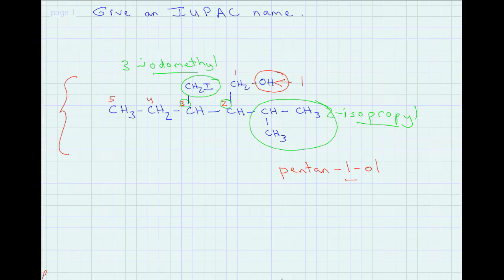Putting it all together, we write: 3-(iodomethyl) in brackets, then 2-isopropyl, followed by the base name pentan-1-ol. So the full name is 3-(iodomethyl)-2-isopropylpentan-1-ol.